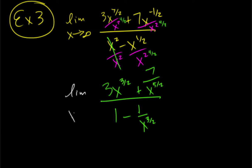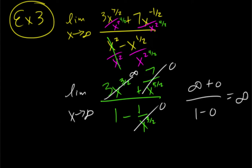Now, if we apply this limit and plug in infinity, this is going to go to infinity. This is going to go to 0. This is going to go to 0. So we have infinity plus 0 over 1 minus 0, which if we work that out, is just infinity.